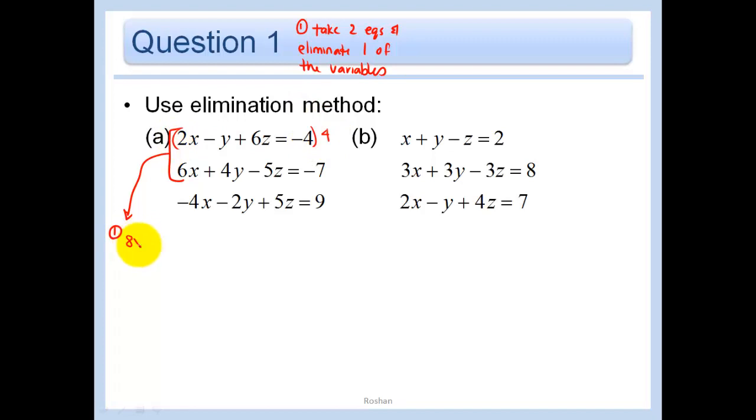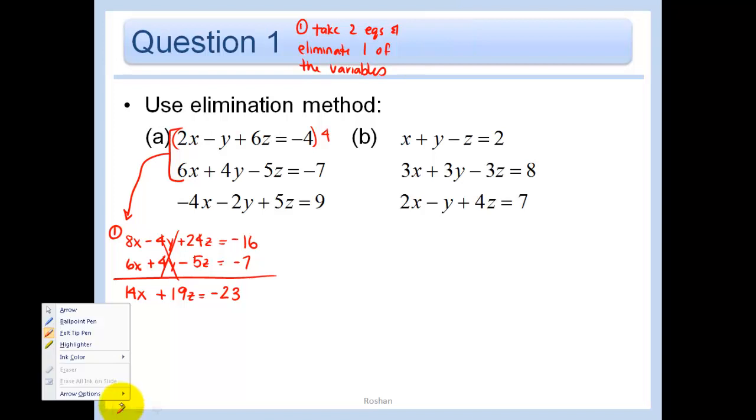We get 8x minus 4y plus 24z. And write the other one as is, right under it. And then add these together, thereby eliminating the y variable. We get negative 23.